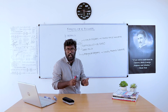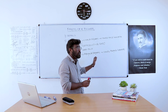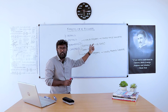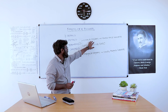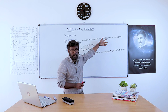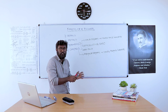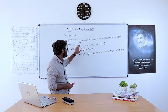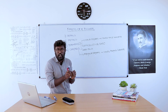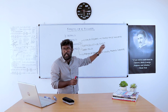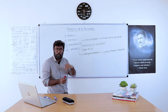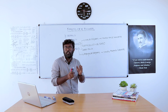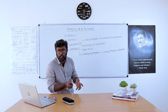Stamens are the male organ and carpels are the female organs. The male organ produces male gametes, present in the pollen grains. The carpel is the female organ which makes female gametes, present in the ovule of the plant.